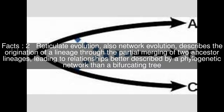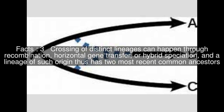Reticulate evolution, also called network evolution, describes the origination of a lineage through the partial merging of two ancestor lineages, leading to relationships better described by a phylogenetic network than a bifurcating tree. Crossing of distinct lineages can happen through recombination, horizontal gene transfer, or hybrid speciation, and a lineage of such origin thus has two most recent common ancestors.